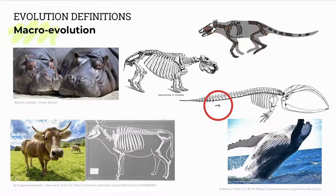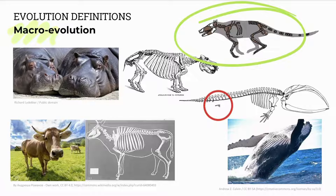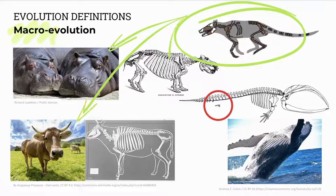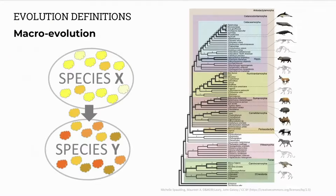Macroevolution is big evolution — large scale evolution, change between species over long periods of time. For example, some scientists suggest that one common ancestor, in this case a four-legged land-living animal, gave rise to hippos, cows, and whales over long periods of time. Macroevolution always involves the formation of new species. We call this formation of new species speciation.